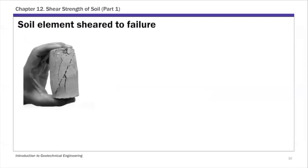To introduce the Mohr-Coulomb failure criteria, I want to start with a soil element sheared to failure in a triaxial test. Later in this chapter, part three focuses on the triaxial test, so we'll learn much more about it then.